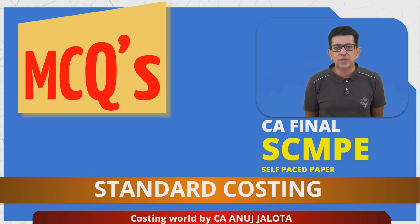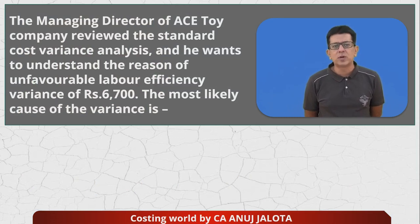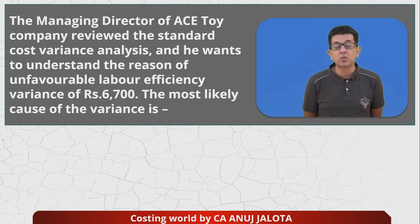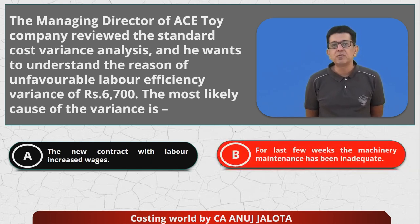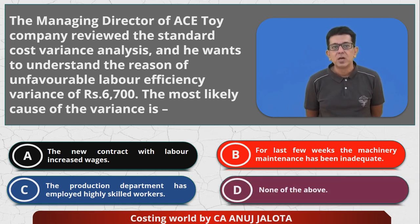Let's do that. The managing director of Ace Toy Company reviewed the standard cost variance analysis and wants to understand the reason for an unfavorable labor efficiency variance of 6700. The most likely cause of the variance is: A) the new contract with labor increased wages, B) for the last few weeks machinery maintenance was inadequate, C) the production department employed highly skilled workers, or D) none of the above.